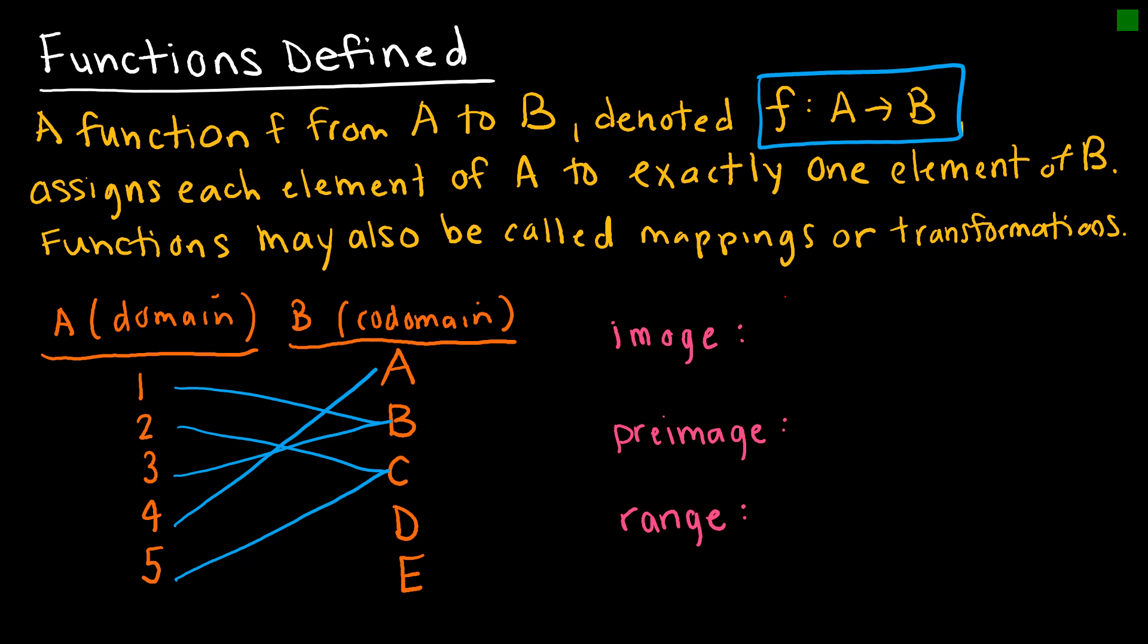Obviously it's important for us to know some of the terminology that we might see. So if we're talking about the image, let's say we know that f of 1 equals B. And I know that because that is this line right here. 1 maps to B. So if the input is 1, the output is B.